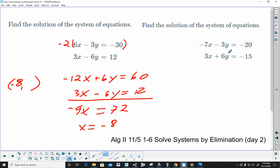So this one, to make these match, it's going to be too hard. I'll make those match. So I'm going to multiply the top by 2. Minus 14x minus 6y is equal to negative 40. 3x plus 6y is equal to negative 15. Negative 9x is equal to, that was negative 15, negative 55.